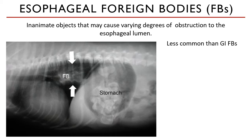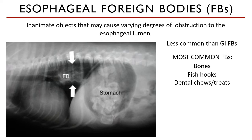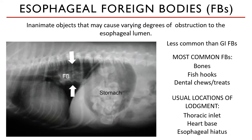The most common foreign bodies in dogs and cats are bones, fish hooks, and dental chews or treats, among many more. The usual areas where foreign bodies are lodged are the thoracic inlet, the heart base, and the esophageal hiatus. Notice these areas are where the esophagus is physiologically narrowed because of the size of the extraesophageal structures.